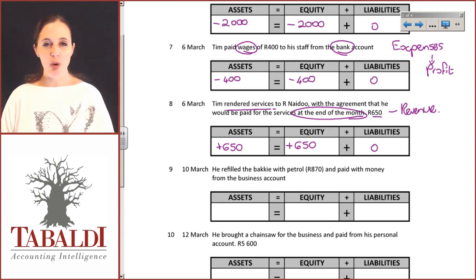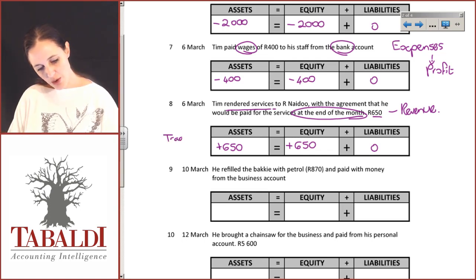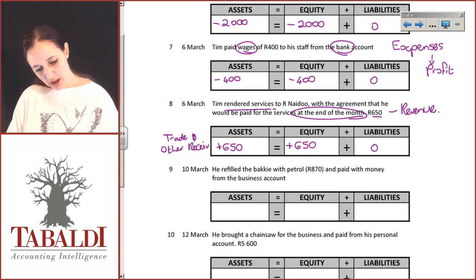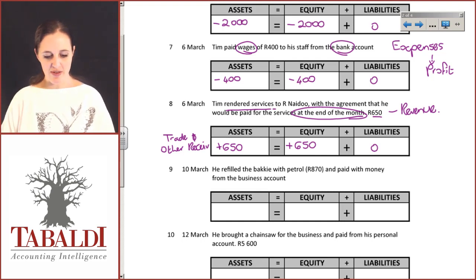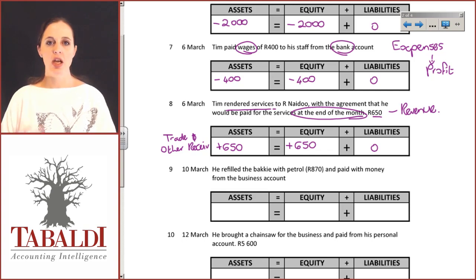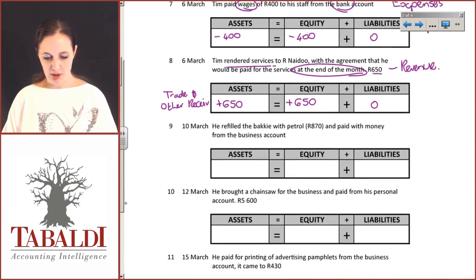Go and take a look at the format of the statement of financial position from study unit two and you'll see they refer to this as your trade and other receivables. A receivable is money that you are going to be receiving in the future. In normal terms many of us call this debtors, but in your statement of financial position we call it trade and other receivables.